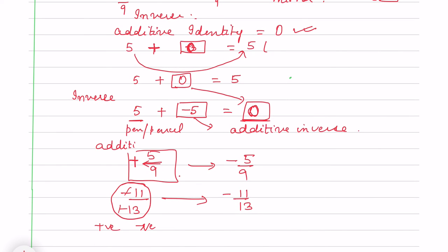Suppose it is 2/3 simply. It lies on the positive side of 0. Its inverse will be on the negative side of 0. Its additive inverse will be -2/3.